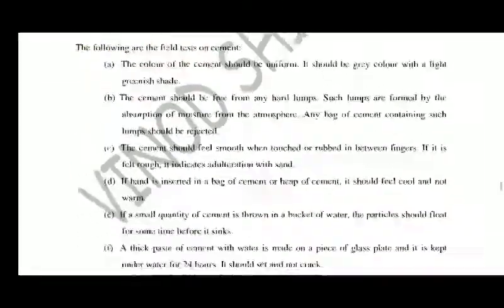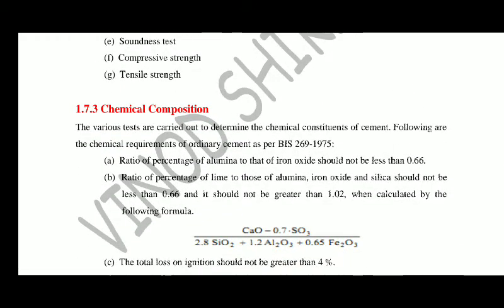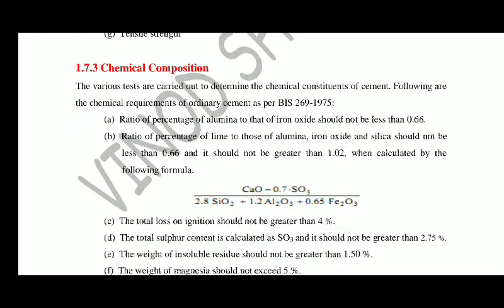In laboratory testing there are various tests: chemical composition, fineness, consistency, setting time (initial and final), soundness test, compressive strength, and tensile strength. For chemical composition: the ratio of percentage of alumina to iron oxide should not be less than 0.66. The ratio of percentage of lime to those of alumina, iron oxide, and silica should not be less than 0.66 and should not be greater than 1.02, when calculated by the given formula.